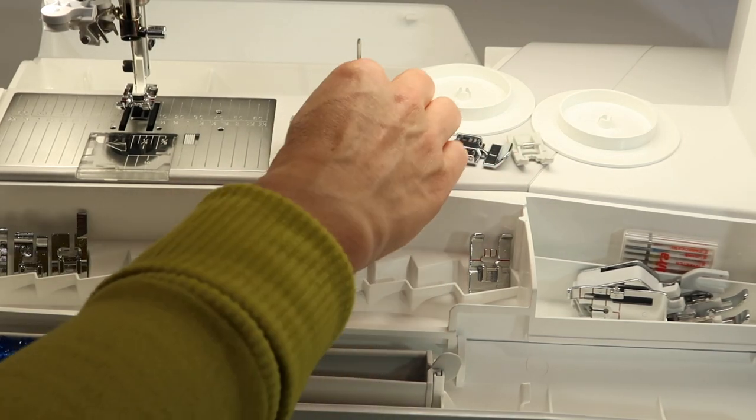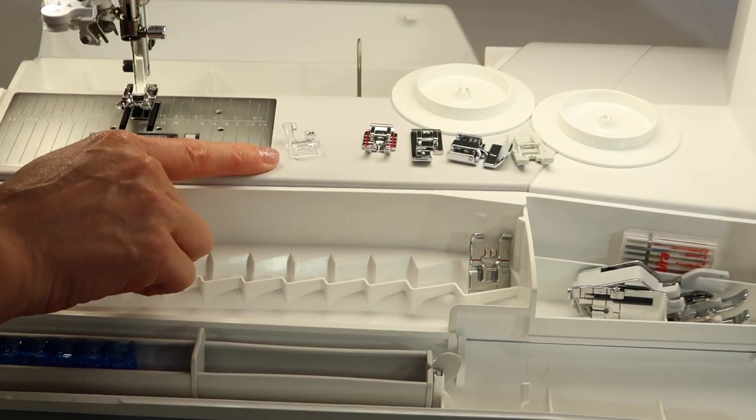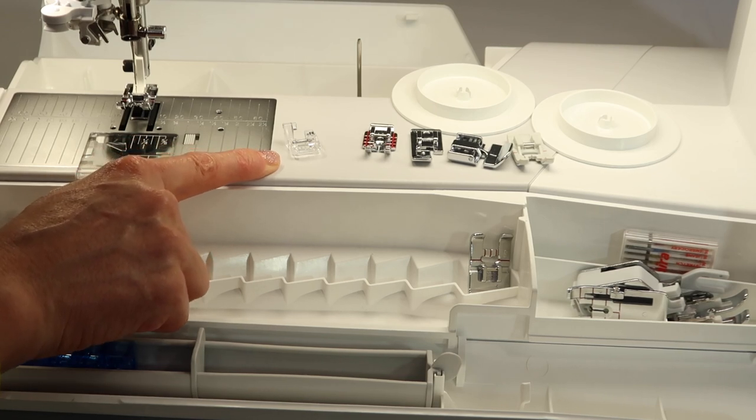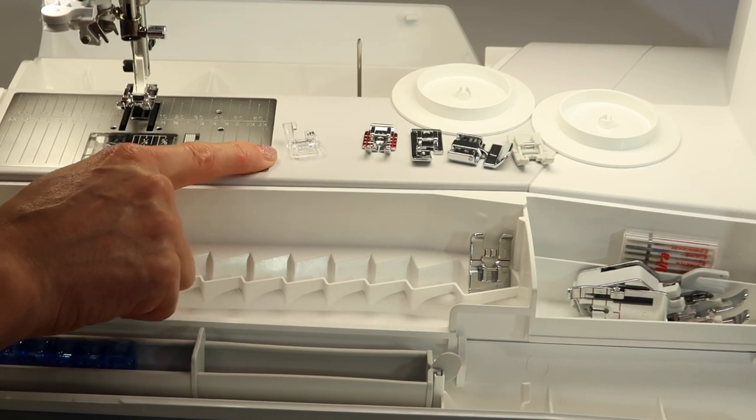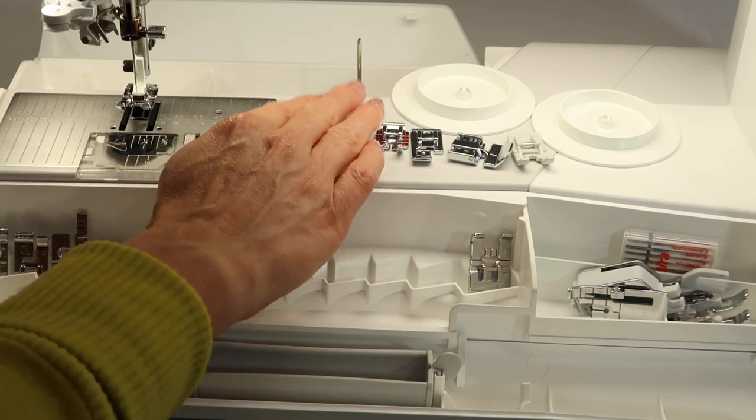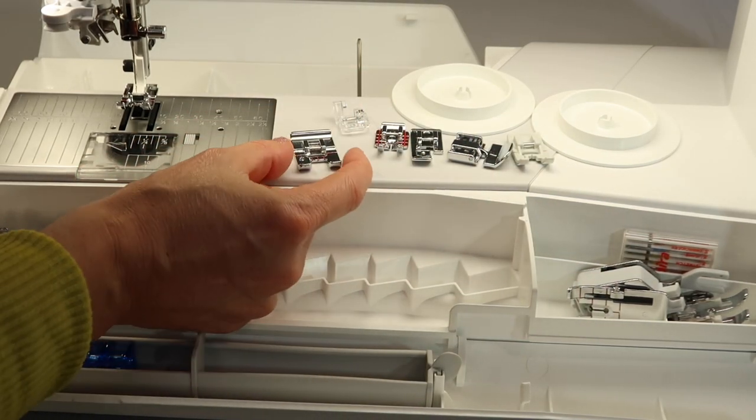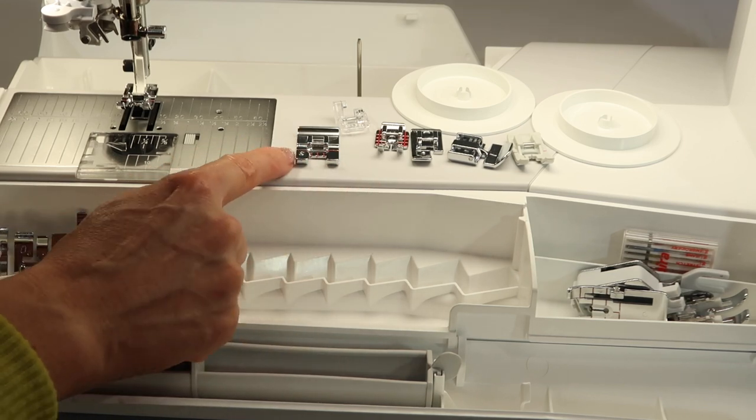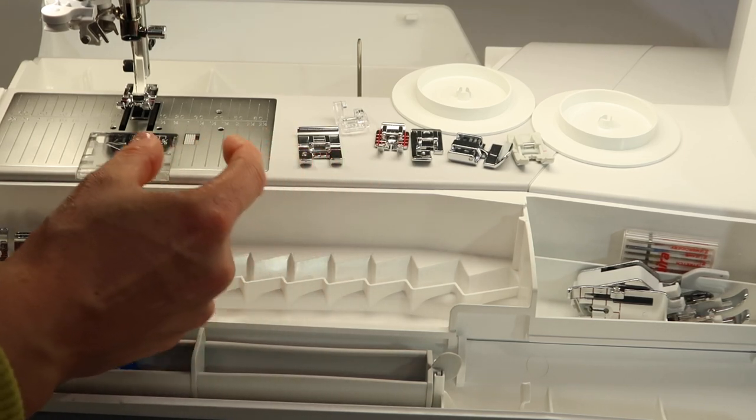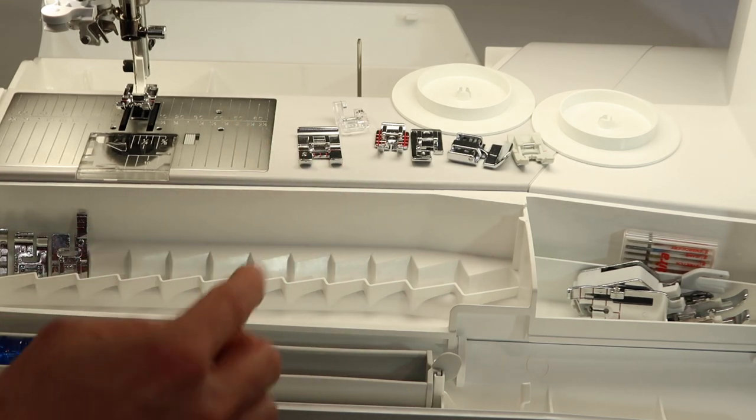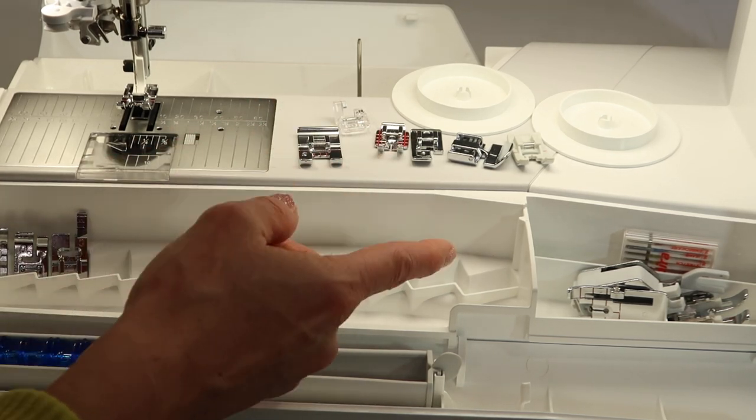Plus, you have a free motion quilting foot. Your store will have other choices for free motion quilting feet, but you have the R foot to get started. And then for your sideways motion stitching, you'll notice this foot, which is ginormous, is labeled S. This one can go side to side doing those wide decorative stitches or just sewing from the left to the right.